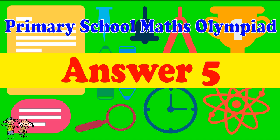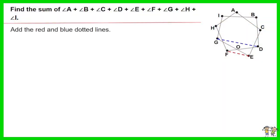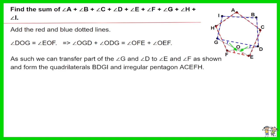Answer for Question 5: Add the red and blue dotted lines. Angle DOG equals angle EOF. As such, angle OGD plus angle ODG equals angle OFE plus angle OEF. We can transfer part of angle G and angle D to angle E and angle F as shown, and form quadrilateral BDGI and irregular pentagon ACEFH.